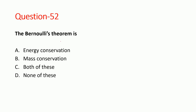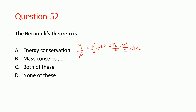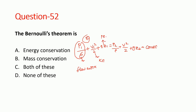Next question: Bernoulli's theorem is based on what principle? The Bernoulli's equation is P1/ρ + V1²/2 + gZ1 = P2/ρ + V2²/2 + gZ2 = constant. This equation is derived from Euler's equation. Here P/ρ indicates flow work, V²/2 is kinetic energy, and gZ is potential energy. So Bernoulli's theorem is derived from conservation of energy. Option A is correct.